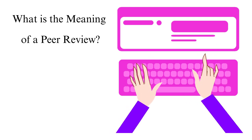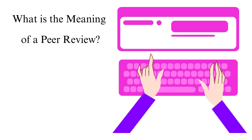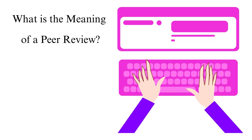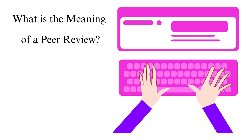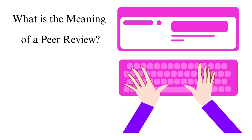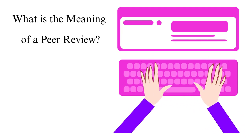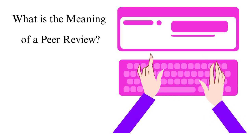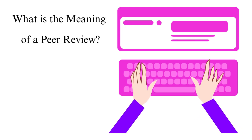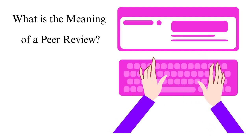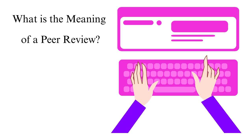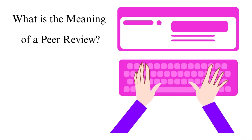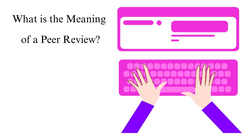Why is peer review important? Peer review is considered the stamp for producing quality research. This process helps filter the content that meets all the features of quality scientific research. The ideal people for reviewing academic papers should be professionals in the field. If you need help writing a review for any of these papers, and especially lab reports, place an order for our services. You can also learn the best tips on how to write a lab report.